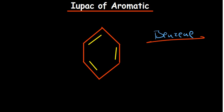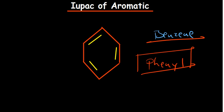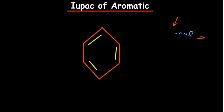When benzene comes as a parent name, we call it benzene. When it comes as a prefix, it's called phenyl — very important, take note of phenyl. You only consider it to be a prefix in a case where it is connected to a chain which has a functional group. If there is no functional group attached, take it as benzene.